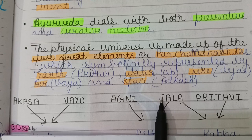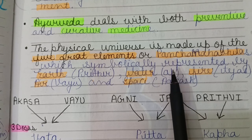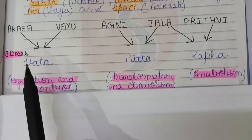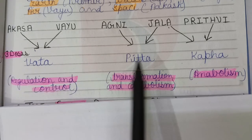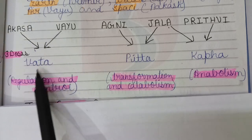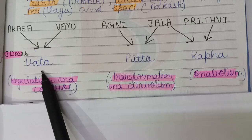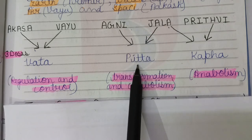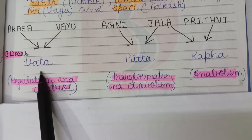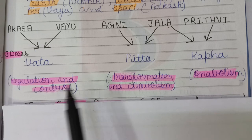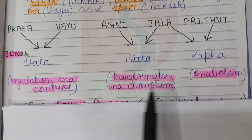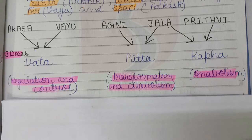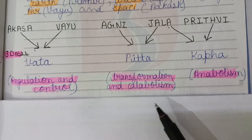By combination of these five great elements, three doshas are formed: Vata, Pitta, and Kapha. By the combination of Akas and Vayu, Vata is made; Agni and Jal make Pitta; and Jal and Prithvi make Kapha. Vata is for regulation and controlling our internal system. Pitta is for transformation and catabolism. Catabolism is the process of breaking a complex substance into a simpler substance.